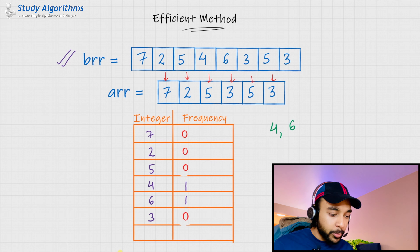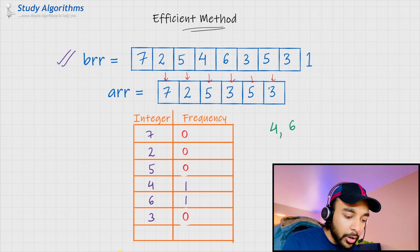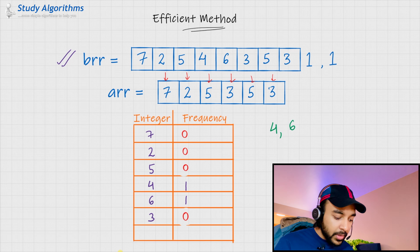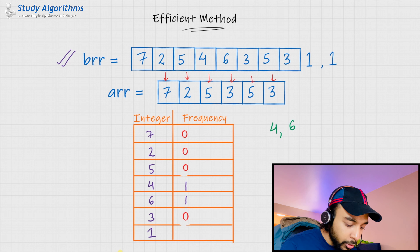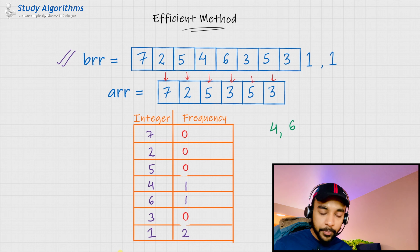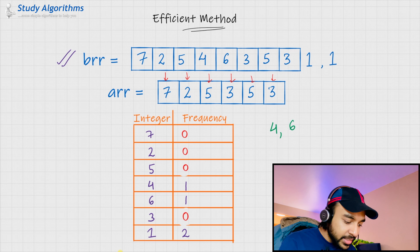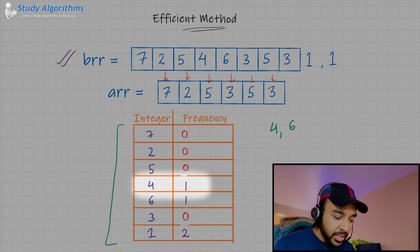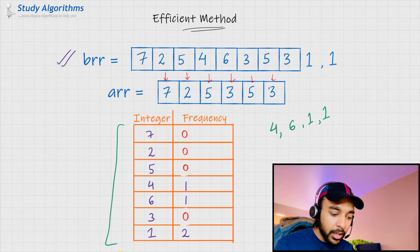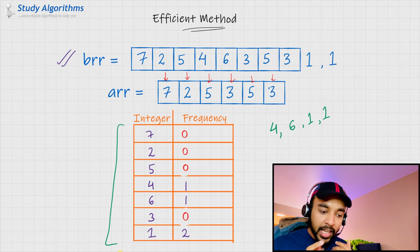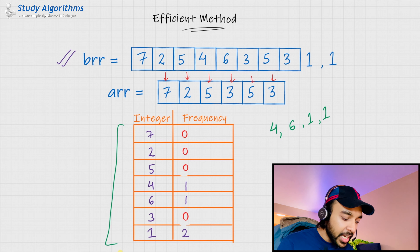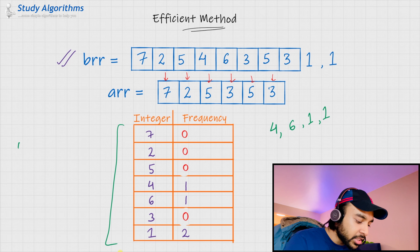An interesting extension to this problem would be: what if you had a 1 in brr and another 1 there as well? When filling my map in the first case, I would have the element 1 with frequency 2. Assuming the array arr remains the same, when I scan the entire map I see 4 with frequency 1, 6 with frequency 1, and 1 with frequency 2, so I'll copy it 2 times. As a last step, I would sort all of these elements and my final answer would be 1, 1, 4, 6.